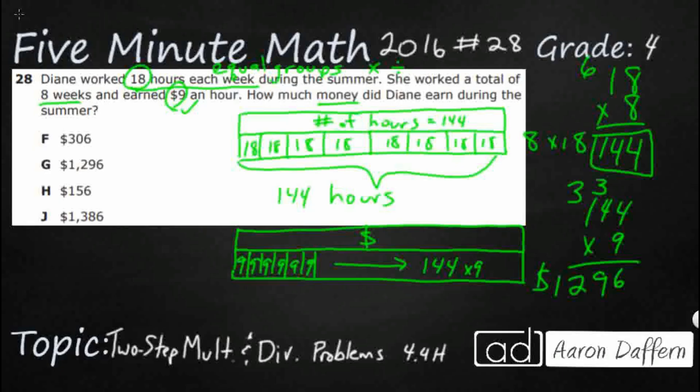So it looks like I've got $1,296. That's the amount of money she earned, which is not that bad. But she did work 144 hours and she got nine dollars an hour. So my answer here is G.